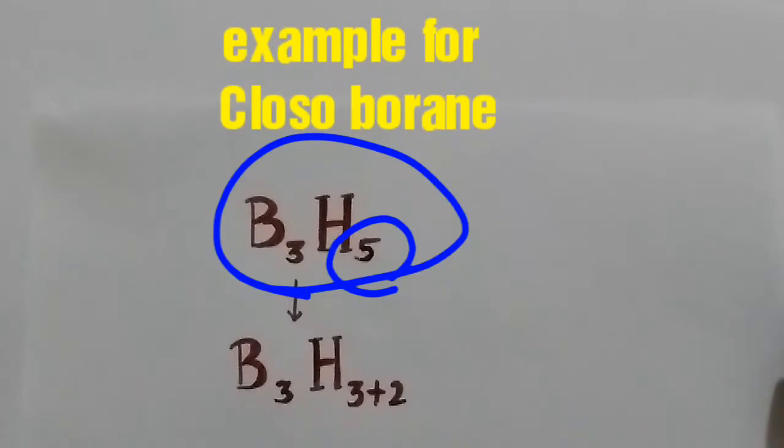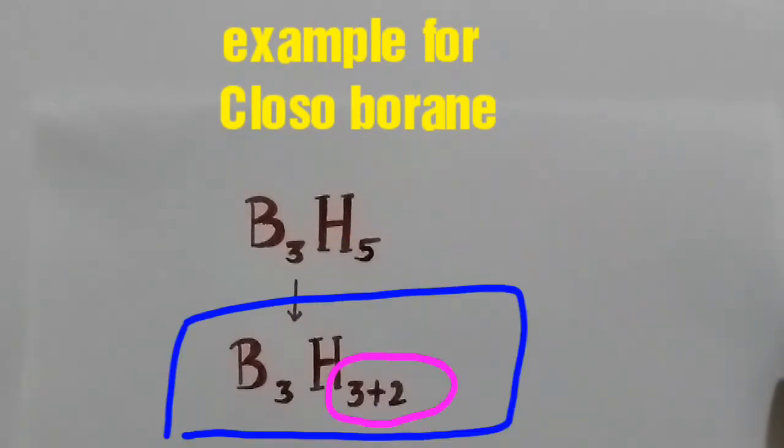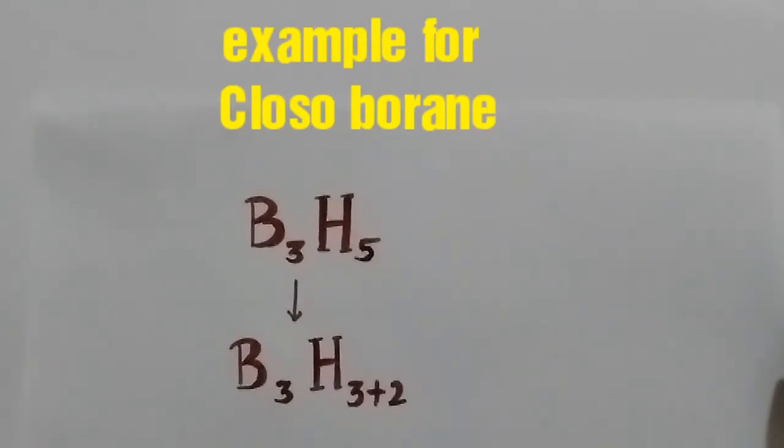The borane B3H5 can be written as B3H3+2 in the expanded form. Hence it becomes a closo structure.